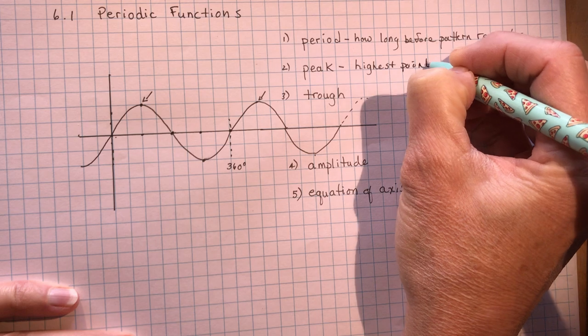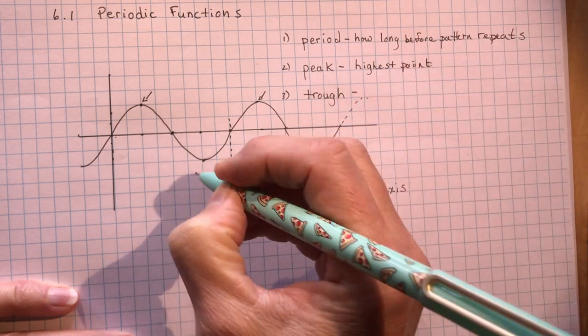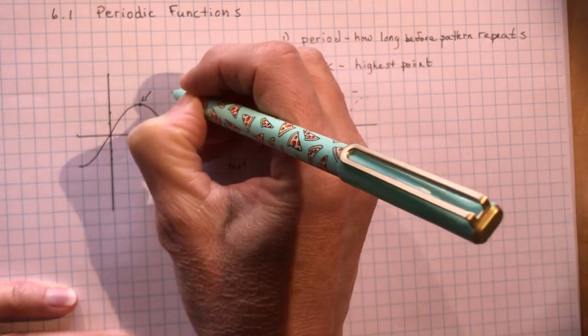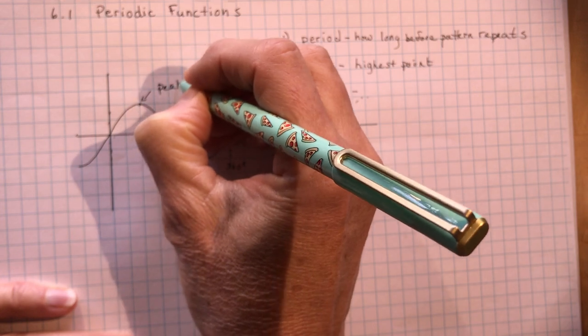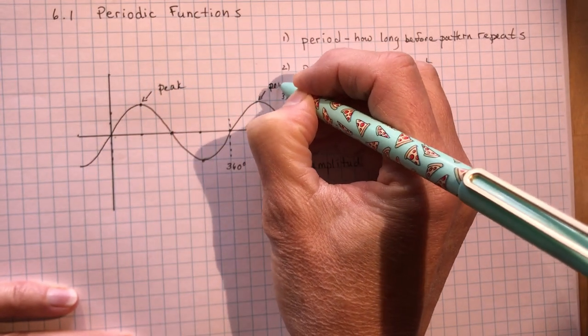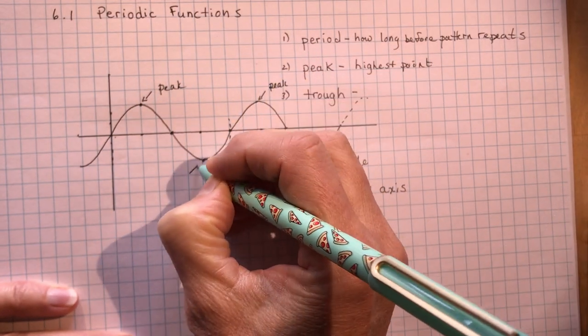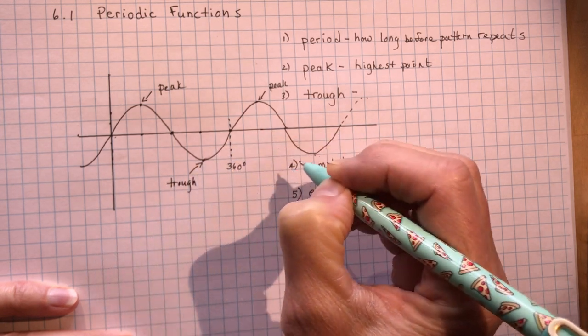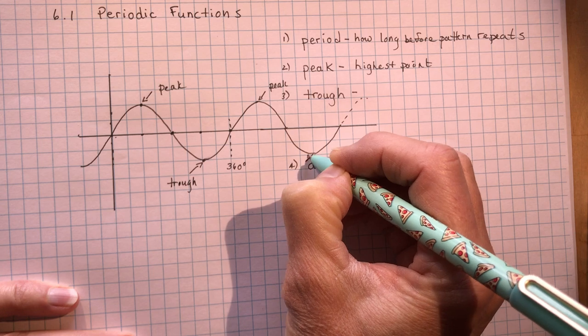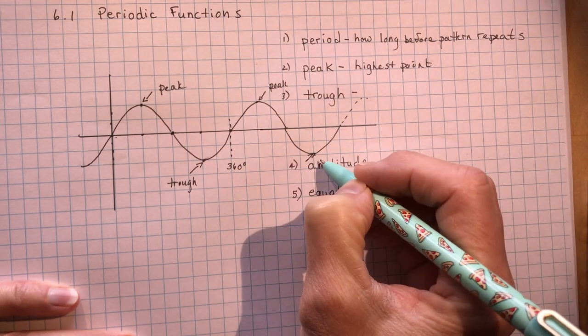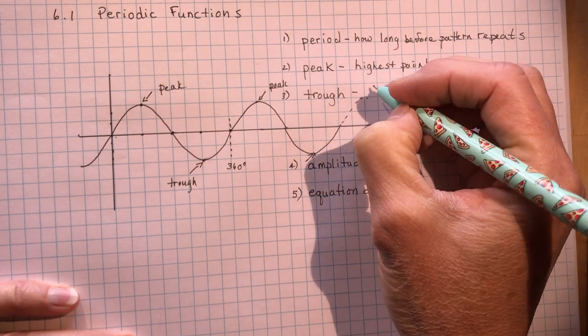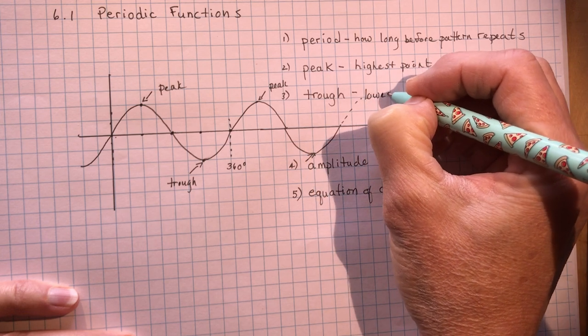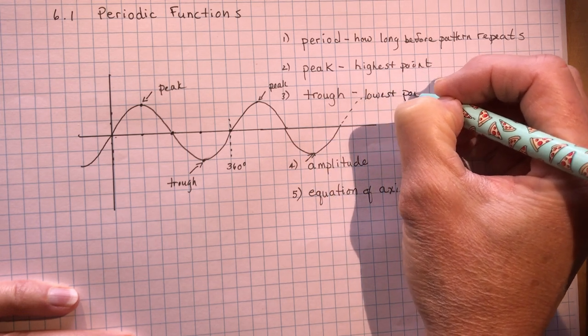The trough. I know it's a weird word, isn't it? Trough. Trough is the lowest. So these are peaks up here because you reach the peak of the mountain, or the trough. You feed pigs from a trough. So it has to have a low point. So those are your troughs. This is the low point, or the lowest point.